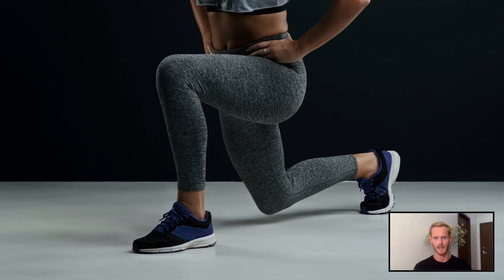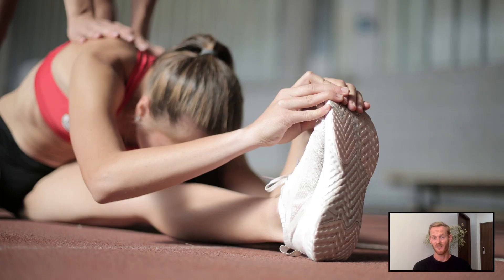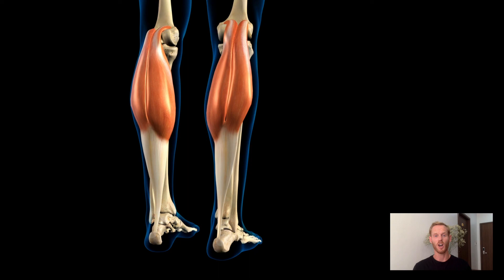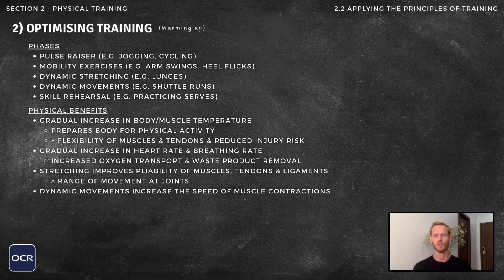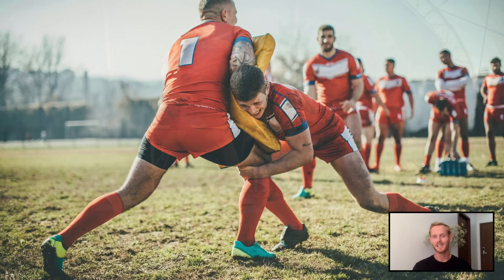Stretching is the third phase, and stretches should be dynamic in most cases, centred around the movement patterns used in the activity being prepared for. Although static stretching is an effective way of training flexibility, it should generally be avoided during a warm-up as it can lead to a reduction in explosive power. Stretching increases the pliability of muscles, tendons, and ligaments, and the range of movement possible at joints. The next phase consists of dynamic movements like shuttle runs that involve changes in speed and direction, which prepare the body for the physical demands of exercise and increase the speed with which muscles contract.